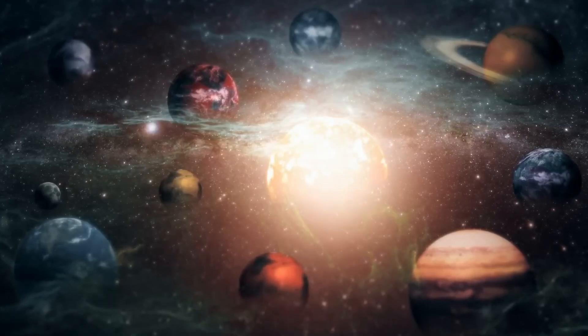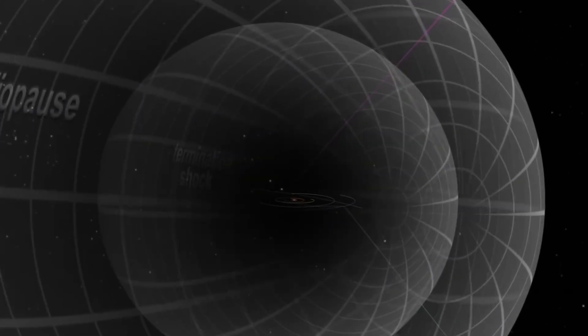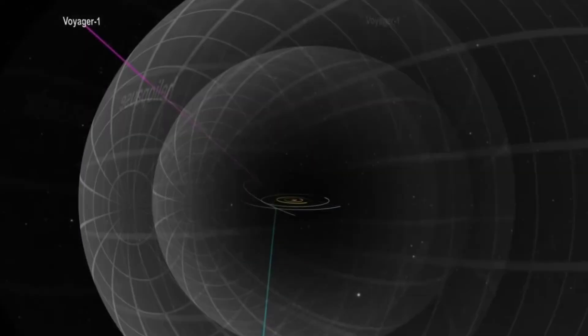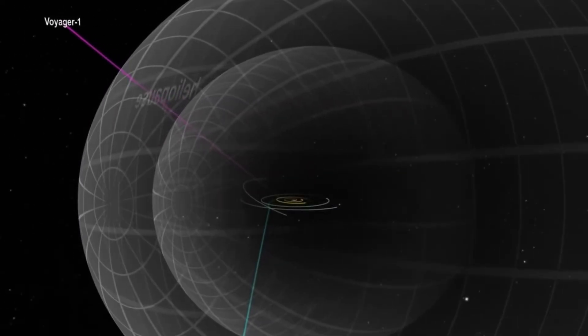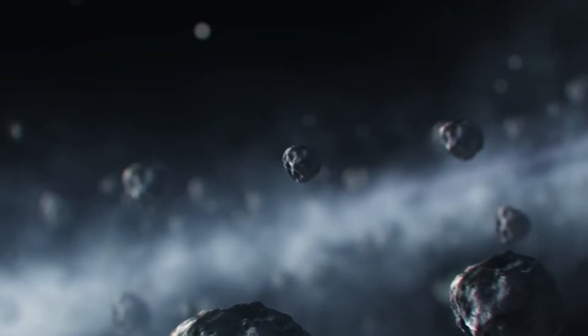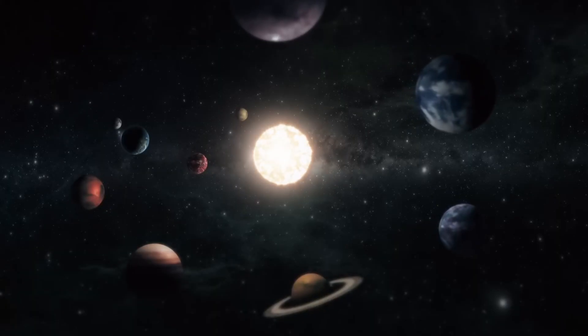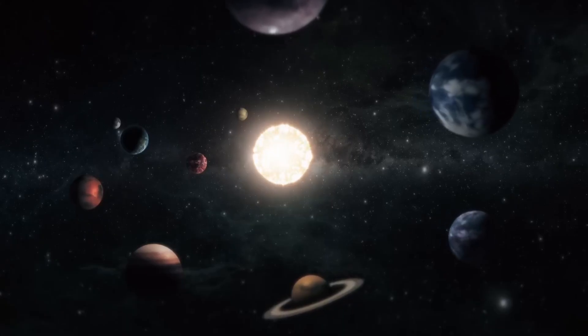The heliopause, where our solar system's influence ends and interstellar space begins, isn't a perfect sphere but a constantly shifting boundary responding to both solar activity and our movement through the galaxy. This dynamic interaction creates a complex structure that bears no resemblance to the neat, orderly system depicted in conventional models. The heliopause shape is distorted because our entire solar system is hurtling through the galaxy at approximately 200 kilometers per second, another crucial fact rarely emphasized in traditional astronomy education.